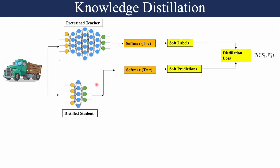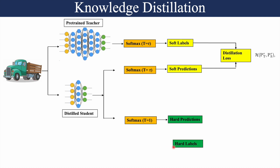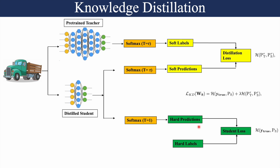The distillation loss is just one part of the process. The second part involves taking the student's final layer logits and passing them through a normal softmax to generate hard predictions, then computing a loss against the known hard labels — called the student loss. Finally, the entire knowledge distillation loss for the student is a weighted combination of the student loss and the distillation loss.